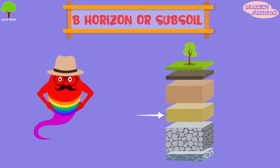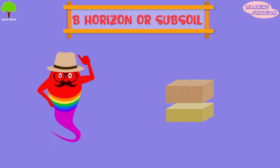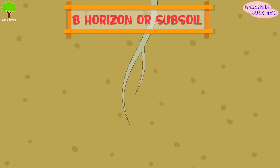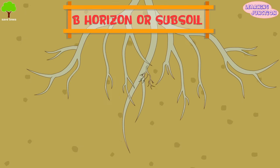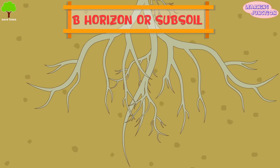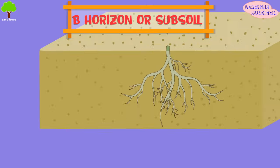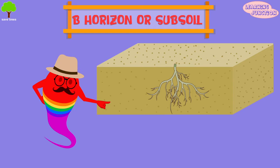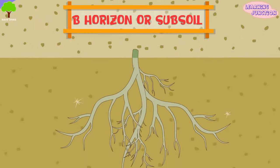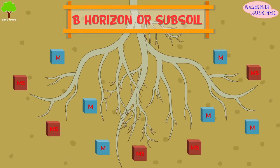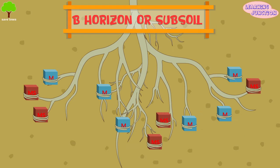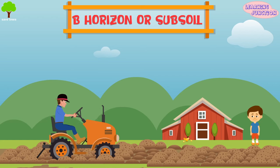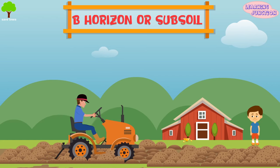B — subsoil. Just below the topsoil lies the other layer called subsoil. It is comparatively solid and tighter than topsoil, so only large plant roots can reach here. It is lighter in color because there is less humus in this layer. This layer is rich in minerals and contains metal salts in a large proportion. Farmers often mix horizon A and horizon B when plowing their fields.